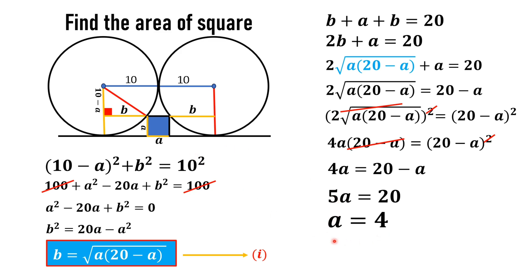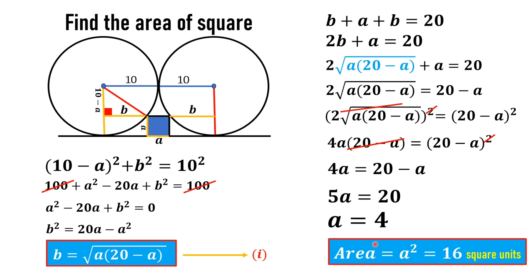We know that the area of a square equals the square of its side length. Therefore, the area of the square equals 4 squared, which is 16 square units — and that is the answer. If you are new to my channel, please subscribe and give a thumbs up to the video. Thank you for watching.